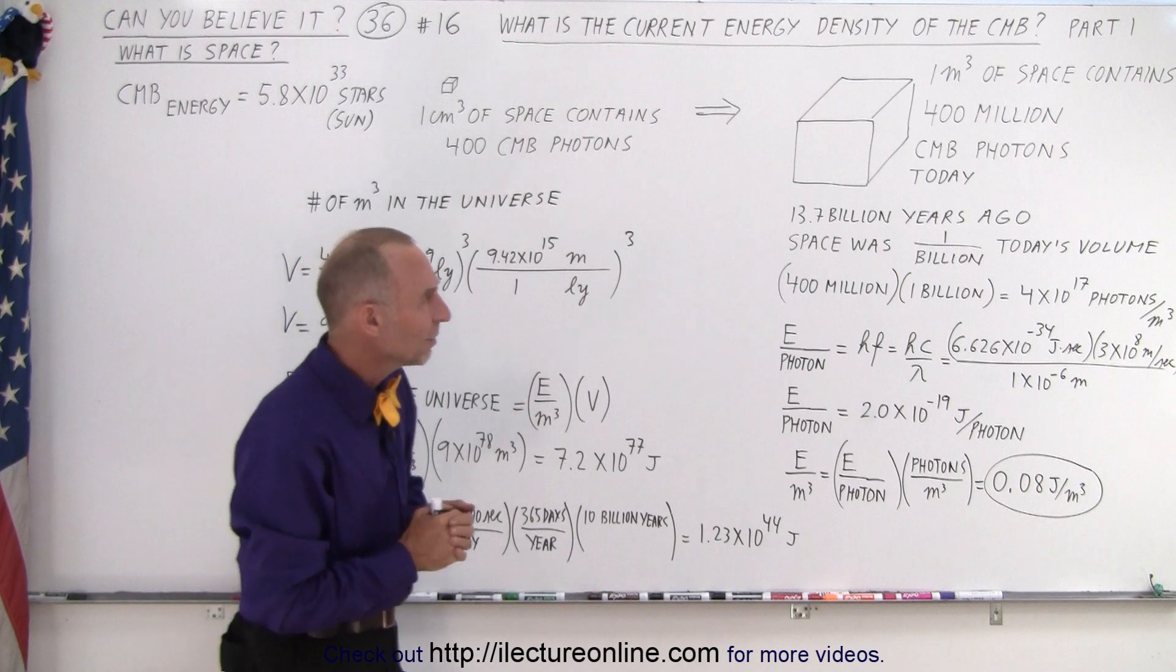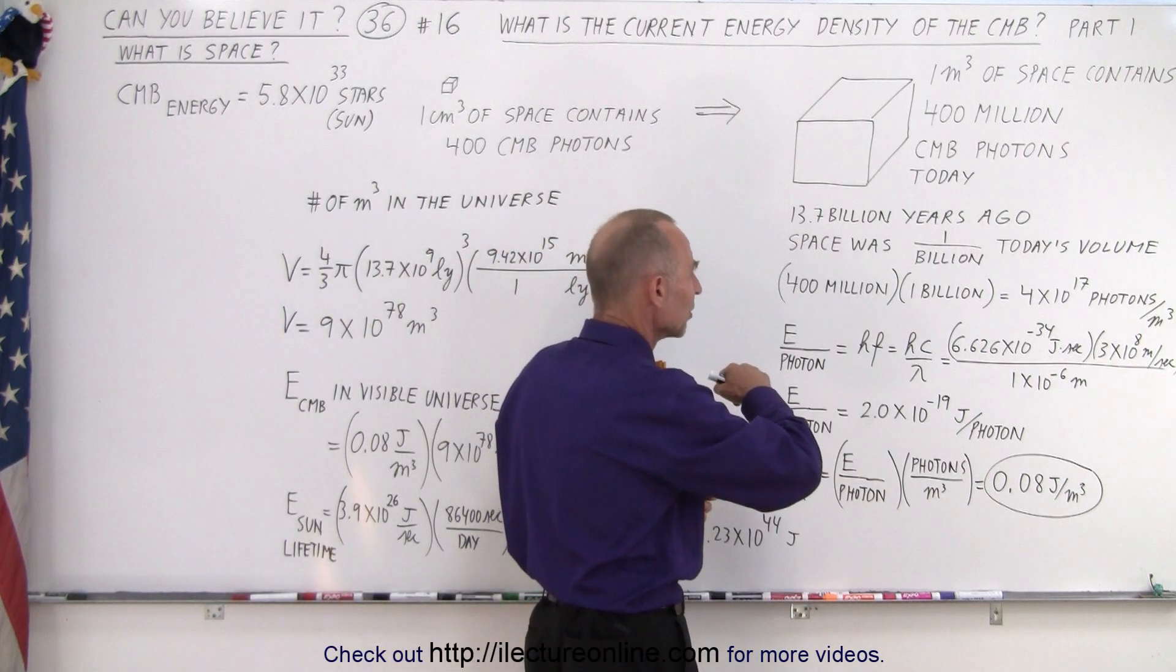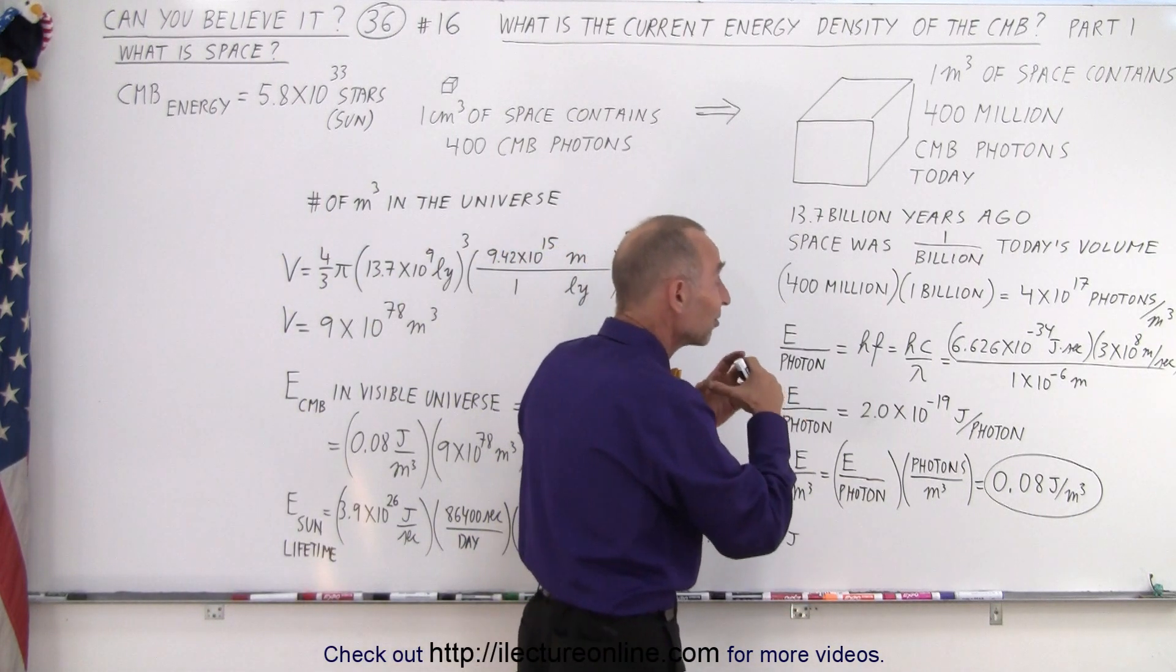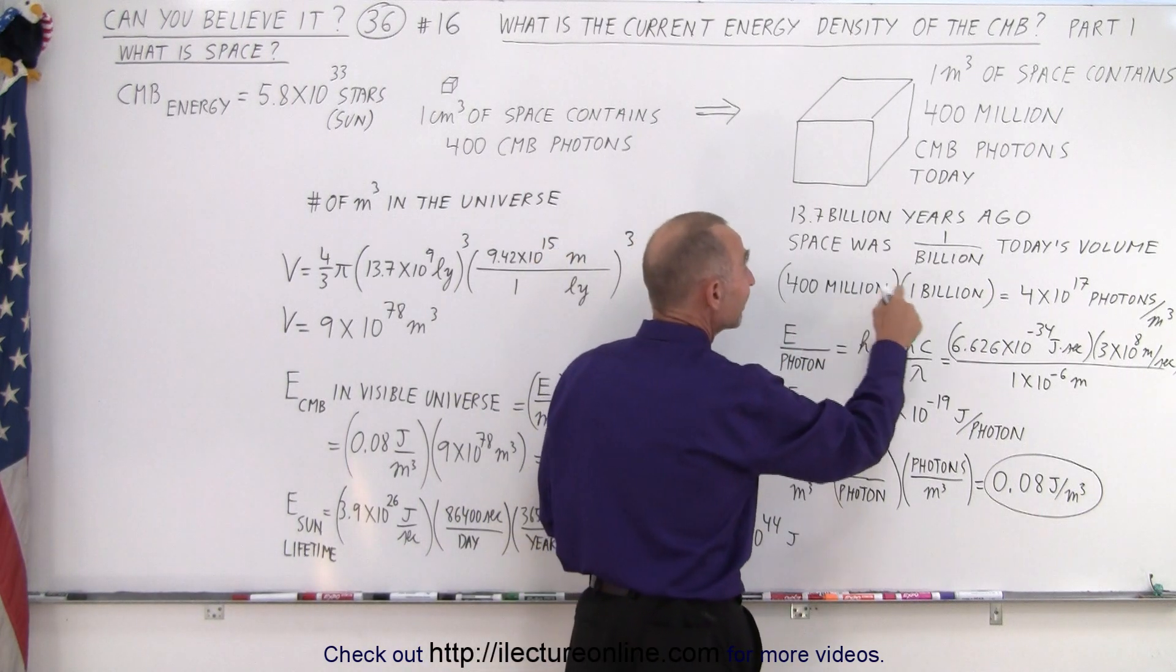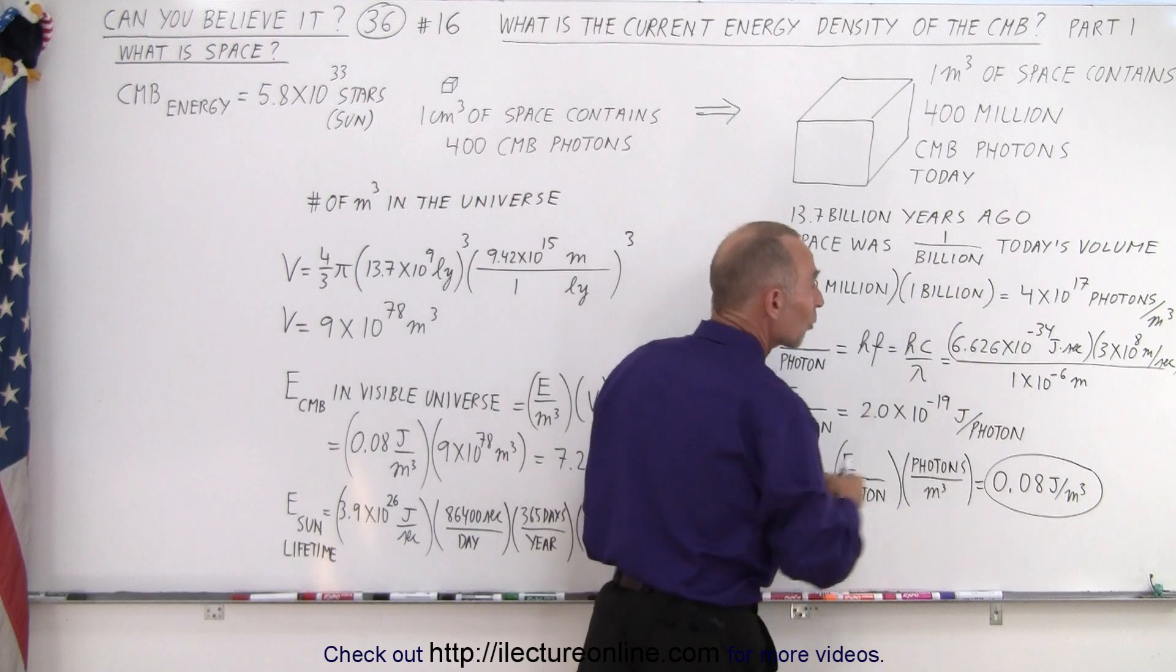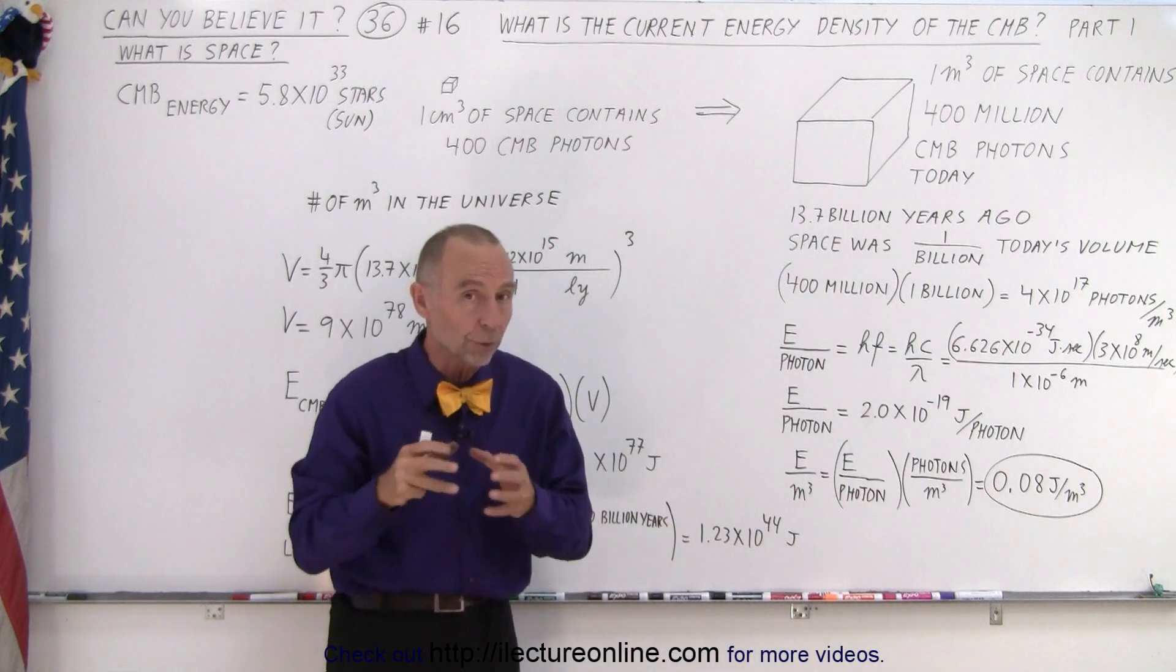So that means that 13.7 billion years ago, the density of CMB photons was 400 million per cubic meter times a billion, or 4 times 10 to the 17 photons per cubic meter.